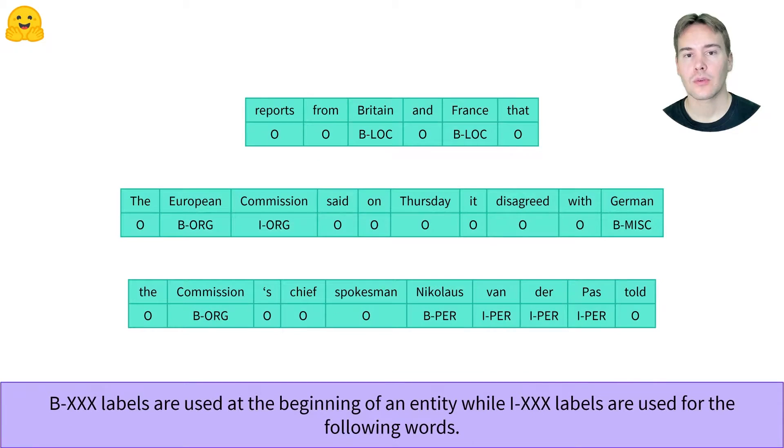Here we're doing named entity recognition. Labels are either O for words that do not belong to any entity, LOC for location, PER for person, ORG for organization, and MISC for miscellaneous. Each label has two versions: the B labels indicate a word that begins an entity, while the I labels indicate a word that is inside an entity.